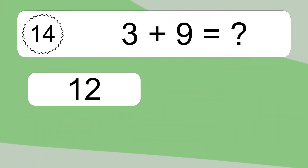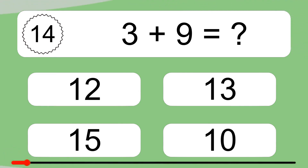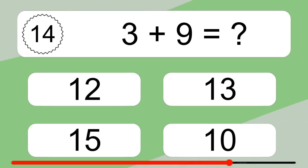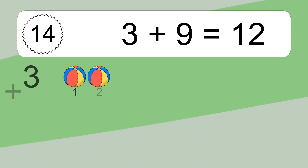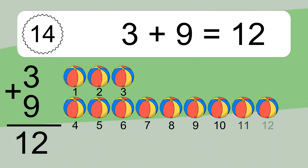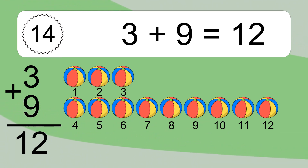3 plus 9 equals what? Let's count it. 3 plus 9 equals 12. Let's count it. 1, 2, 3, 4, 5, 6, 7, 8, 9, 10, 11, 12.